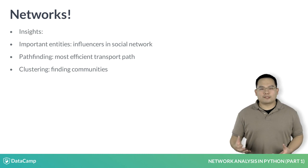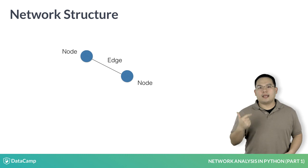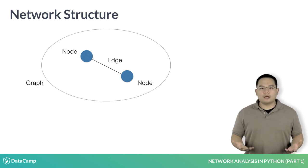Let's go a bit more technical. Networks are described by two sets of items, nodes and edges. Together, these form a network, otherwise known in mathematical terms as a graph.